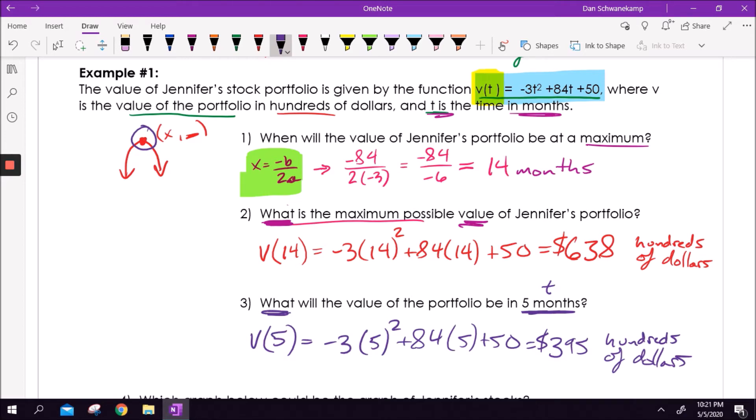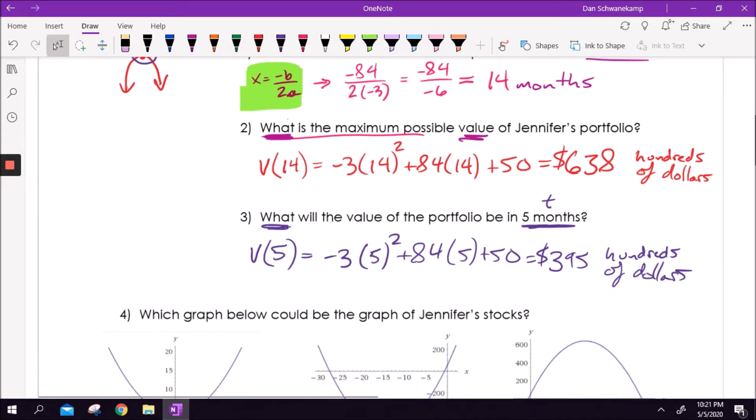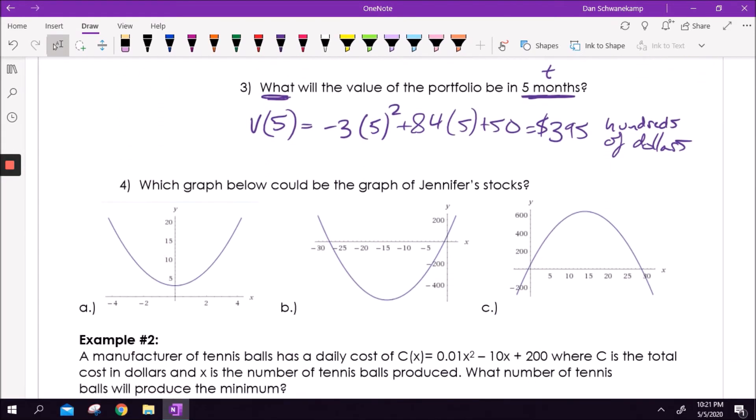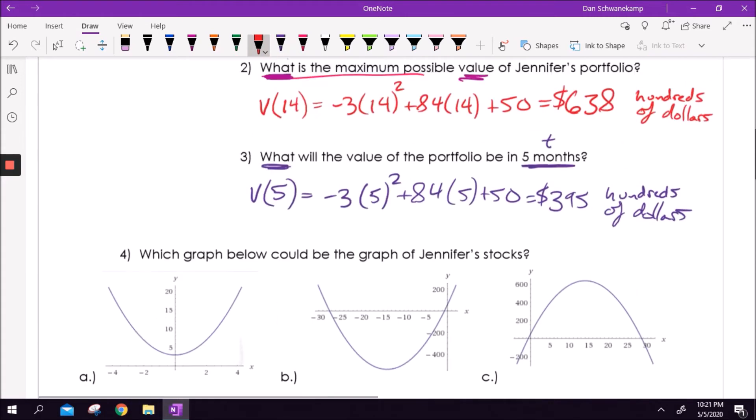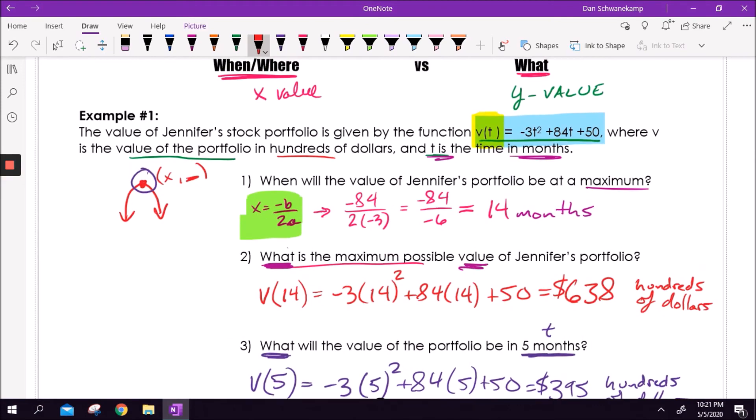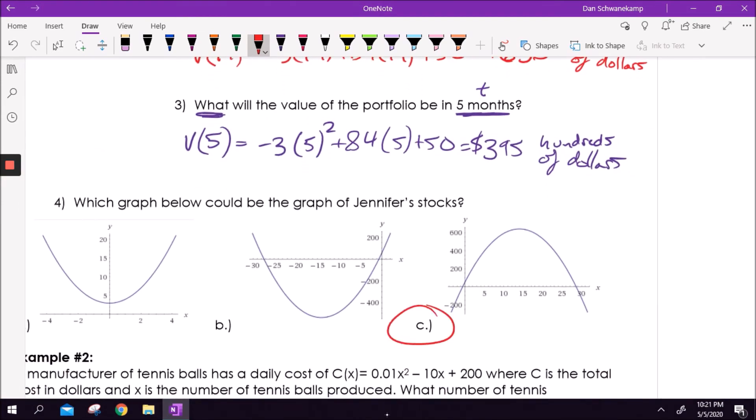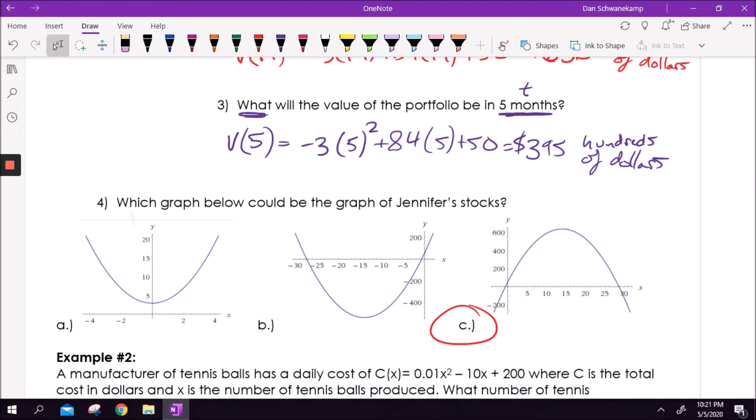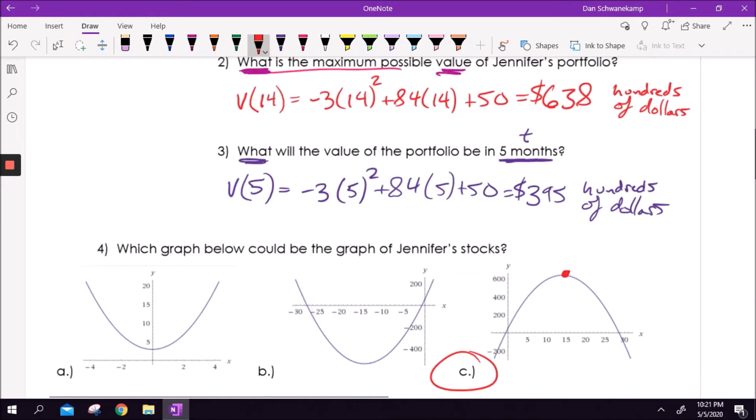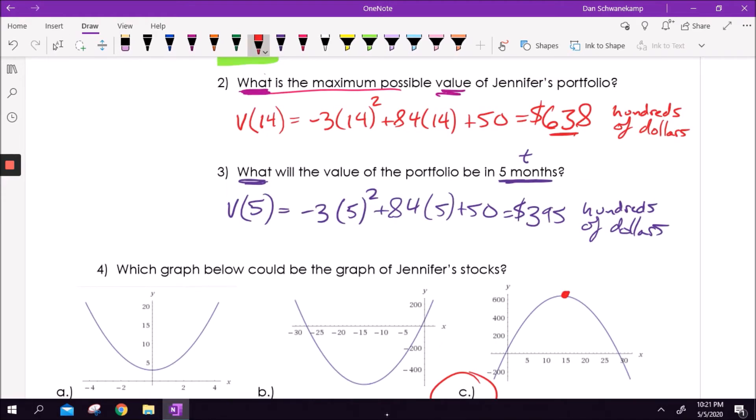I'm just using a regular calculator. You don't have to have anything fancy here. Desmos would be a great graphing tool as well. Which graph below could be the graph of Jennifer's stocks? Well, we know it was negative 3t², so it's going to be a downward facing parabola. And we found this value - you can tell right there that 638 looks about right.